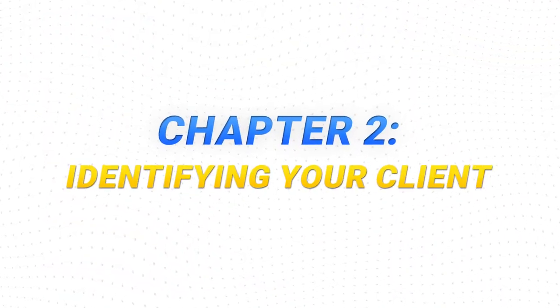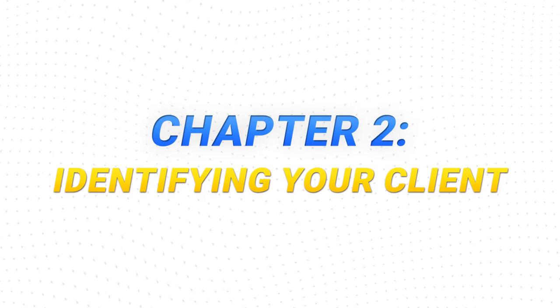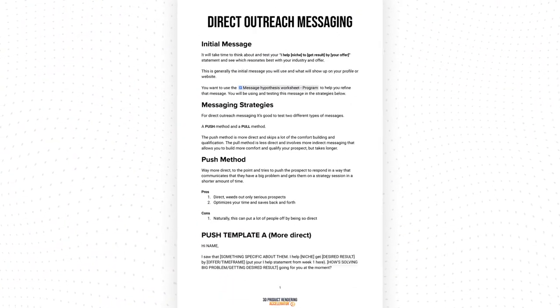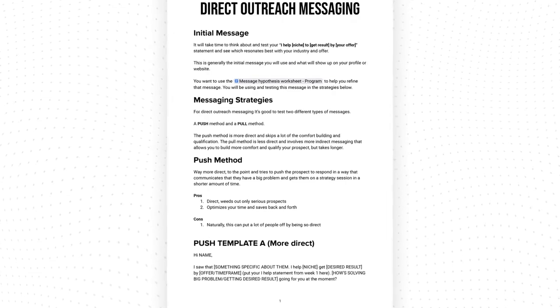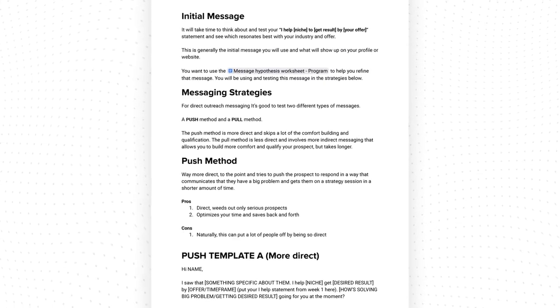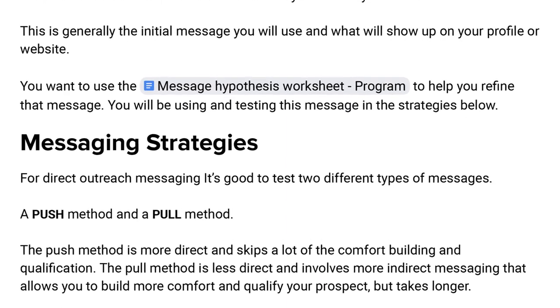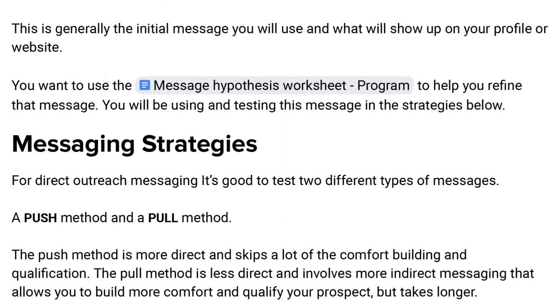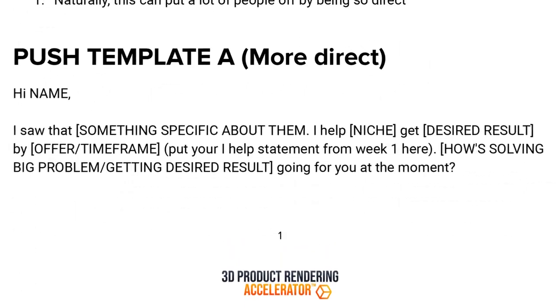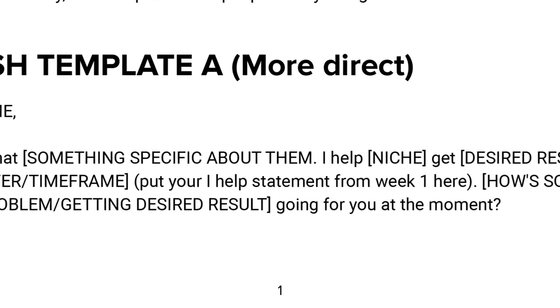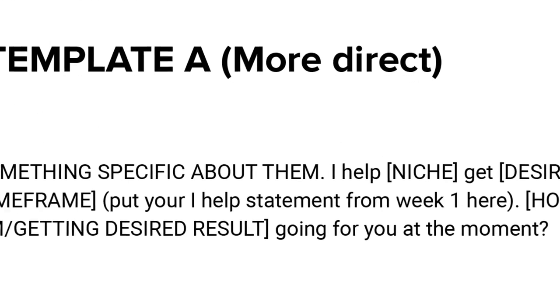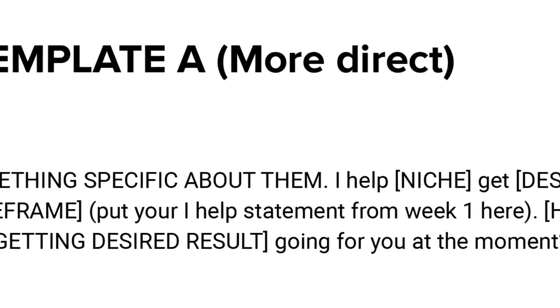Once you've decided what you're going to offer a client, who do you offer it to? How do you find them and how do you reach out to them? To know who you need to reach out to, you need to create what's called a client avatar — a detailed profile of who your ideal client is. This includes understanding their needs, their goals, their pain points related to your service, and other attributes like their location, their age, and all the information about an ideal client you'd want to work with.